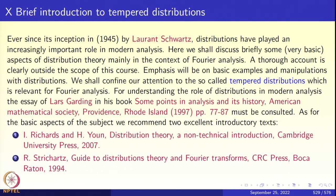There are several books on distribution theory. I have picked out two of them. Ion Richards and H. Youn, 'Distribution Theory: A Non-Technical Introduction,' which appeared in 2007 by Cambridge University Press — this is the second edition. And then Strichartz's book, which I already referred to before: 'Guide to Distribution Theory and Fourier Transforms,' C.R.C. Press, Boca Raton, 1994. It's highly recommended that after this course you read Strichartz very thoroughly. It's a very well-written book.